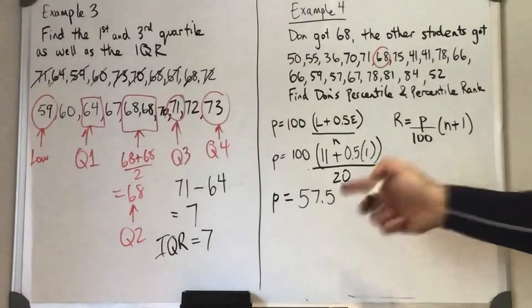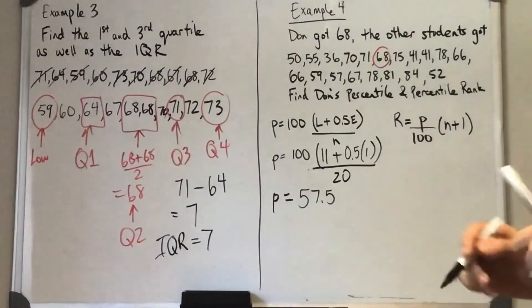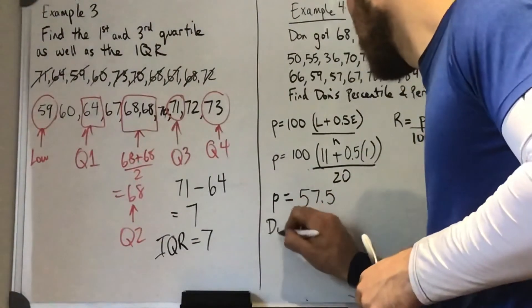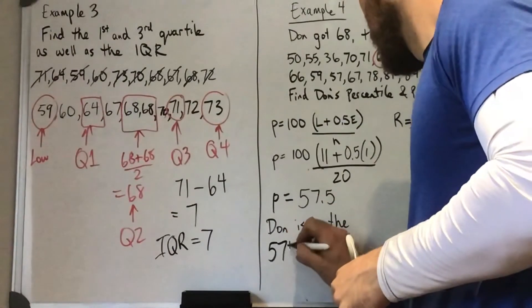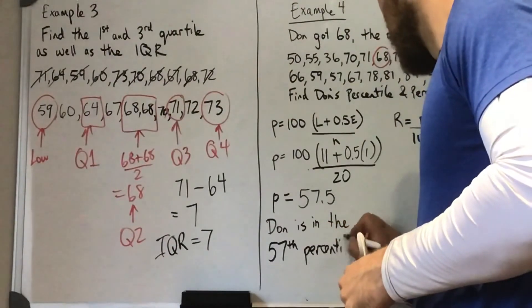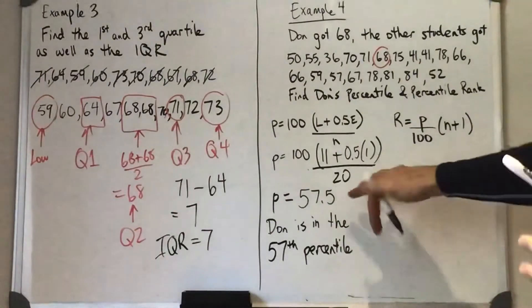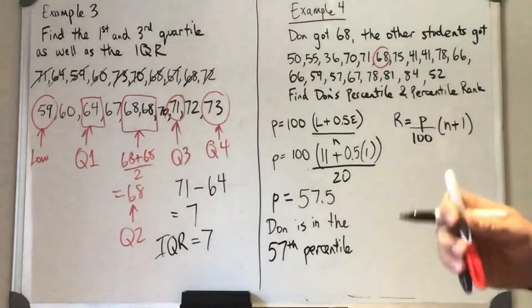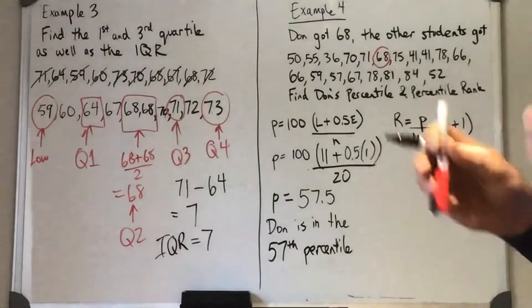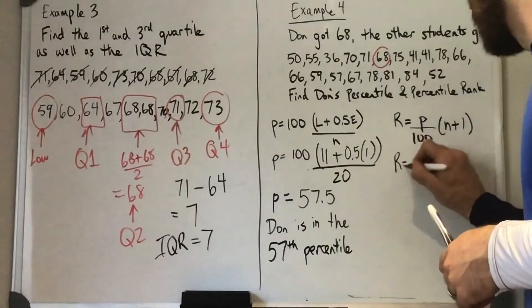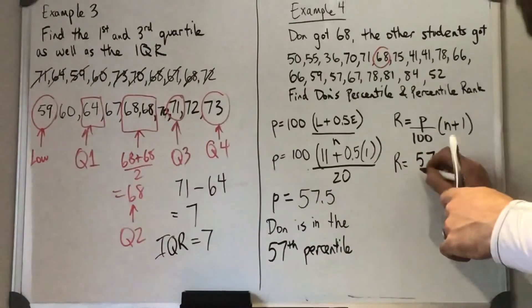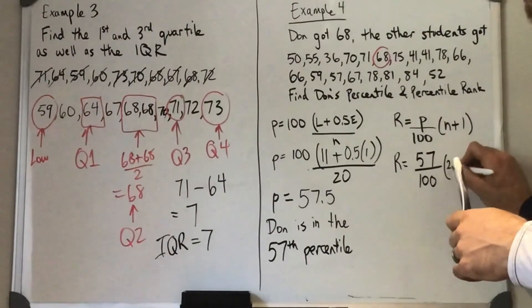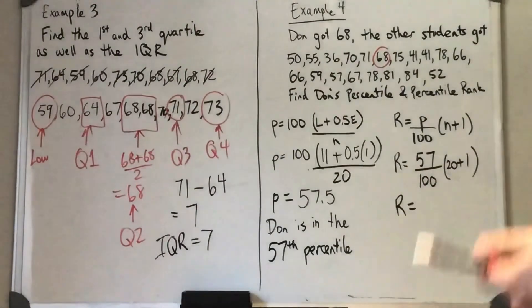If we get 57.5 — or any decimal answer for our percentile — we always round down. Even if it said 57.9, we're still rounding down. So we can say Don is in the 57th percentile. The reason we round down is that we want to say with 100% certainty what percent is below him. If we ever round up, it's not a true statement — so you always, always round down. For the rank, we take his rounded percentile and our sample size of 20, giving us 57 over 100 times 21.